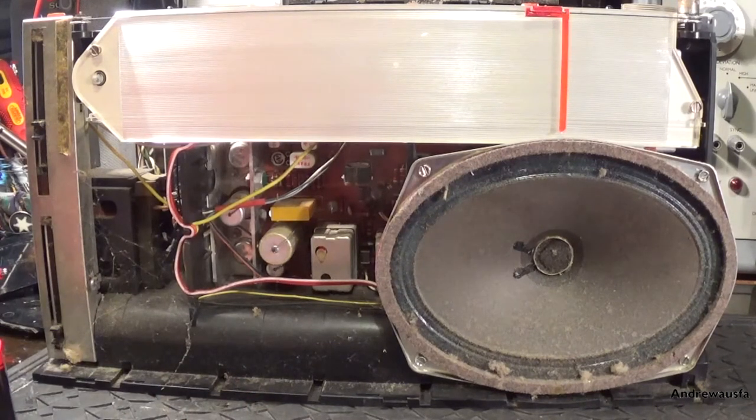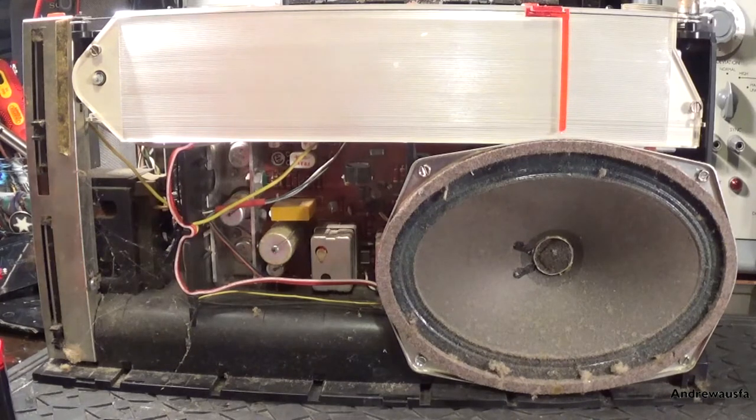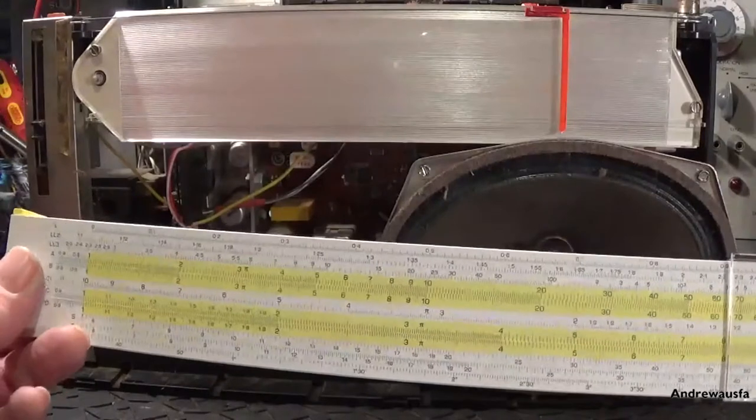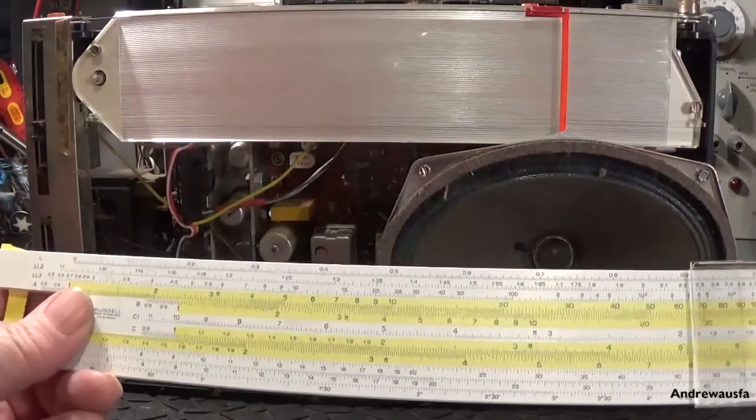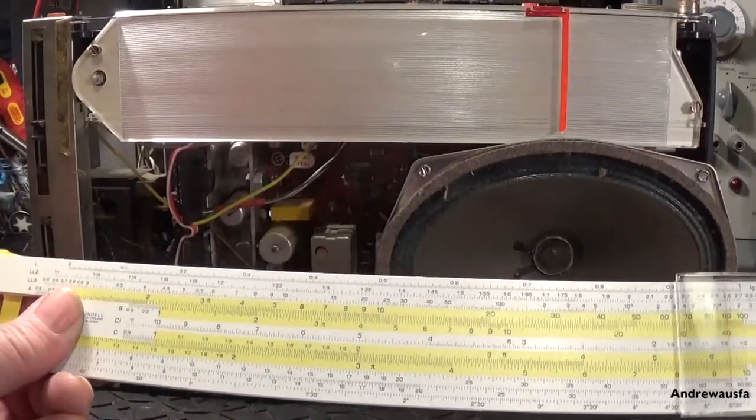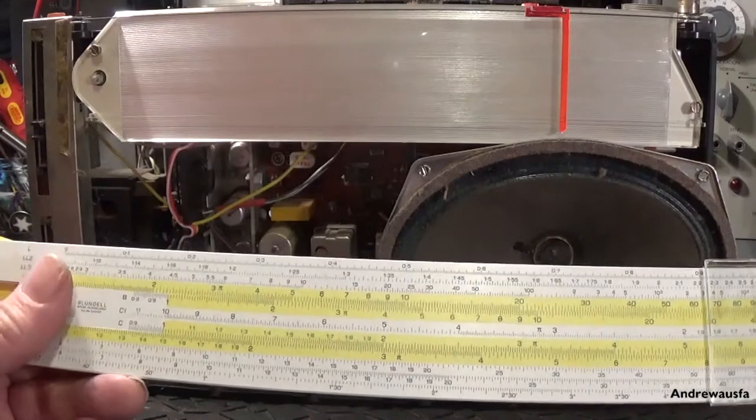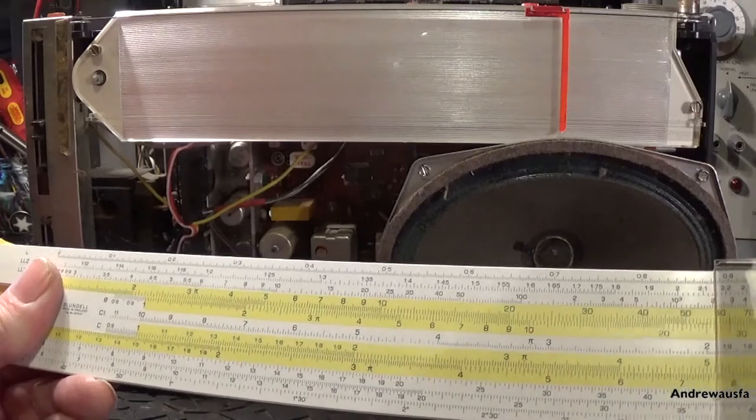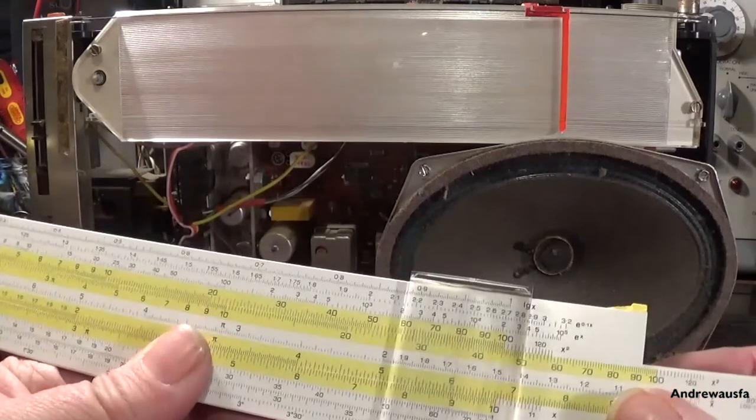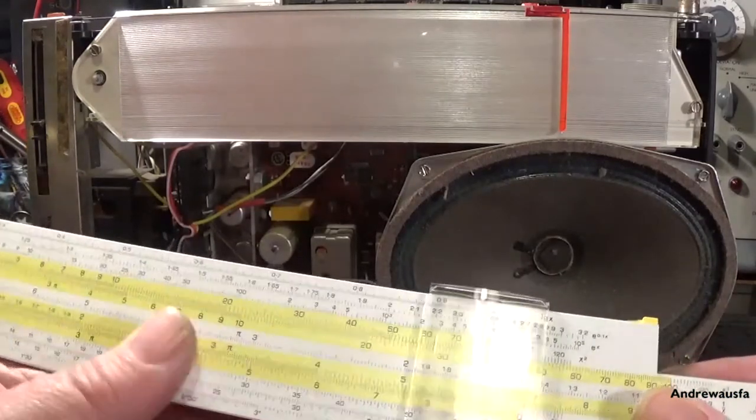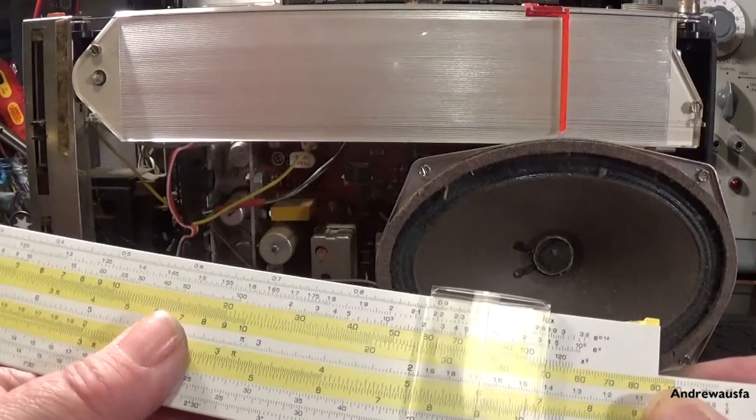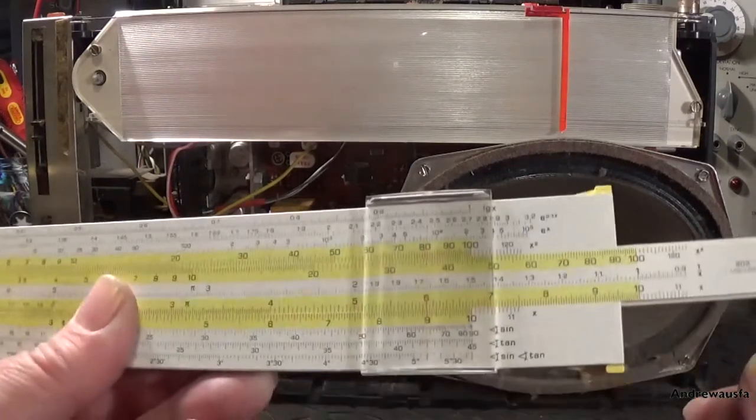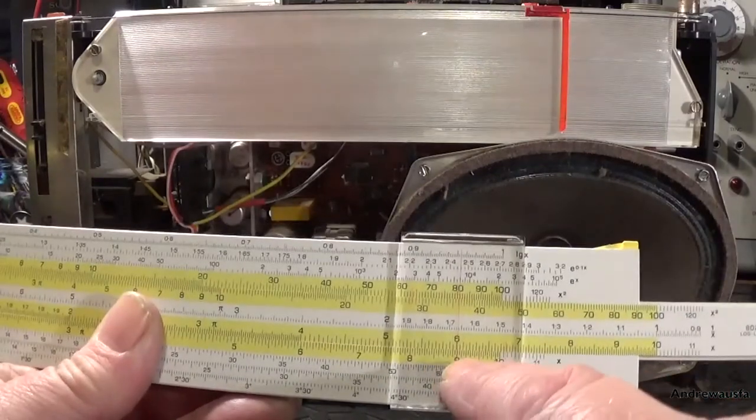It requires 6 1.5 volt batteries, so we're going to calculate how much voltage we need. We're going to put our slide rule on here and count 6 times 1.5. Put the thing on 6, and the answer is 9 volts. Brilliant.